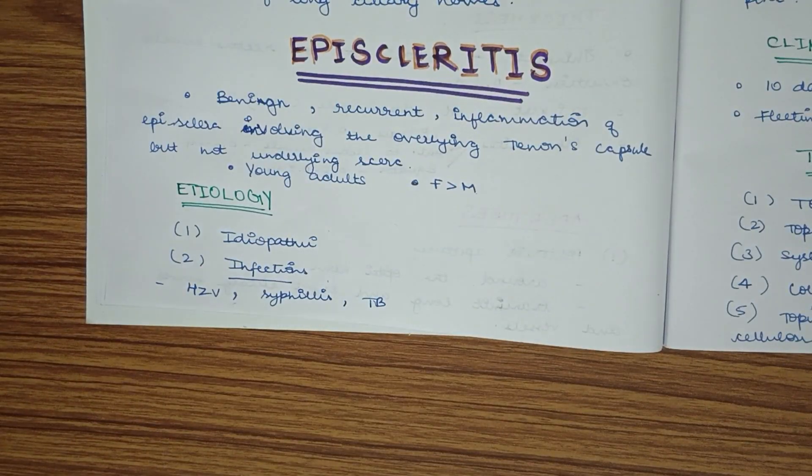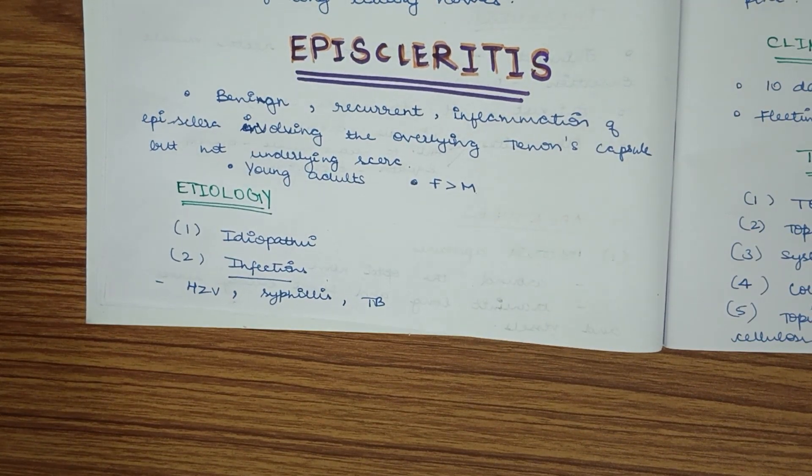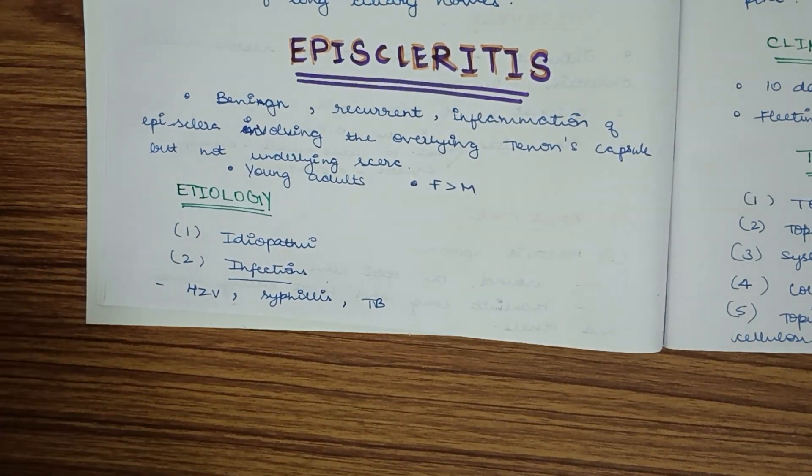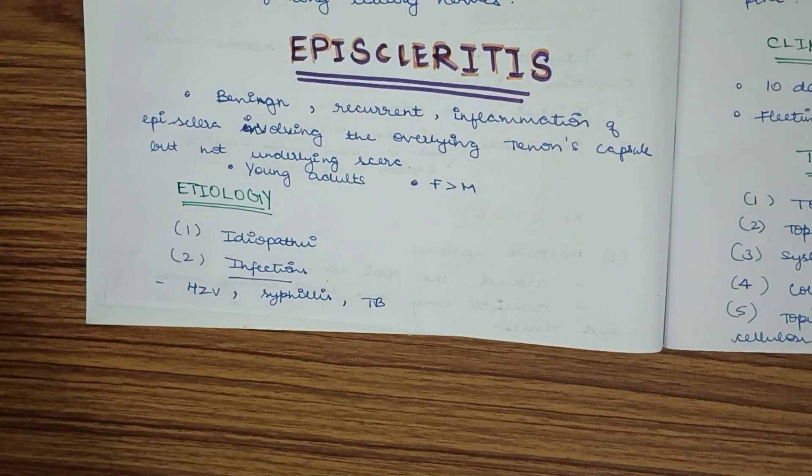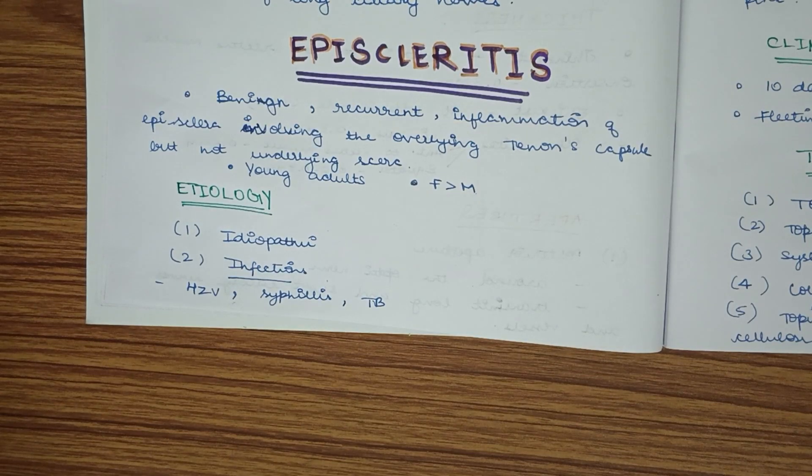Today we will study episcleritis. From the word 'itis' we know it means inflammation. Episcleritis is a benign recurrent inflammation of the episclera which involves the overlying Tenon's capsule but not the underlying sclera.